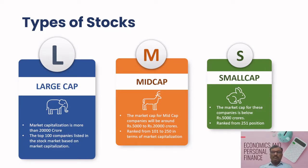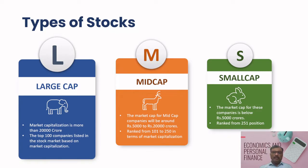Please note that market capitalization is not a fixed category, and the classification of a stock can change over time as the stock price and outstanding shares fluctuate. Additionally, there are categories such as micro cap and mega cap, which are sometimes used to further differentiate stocks based on their market capitalization.